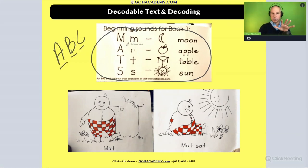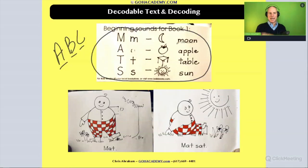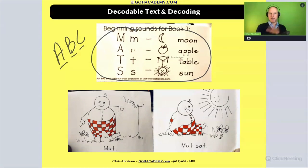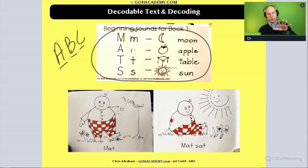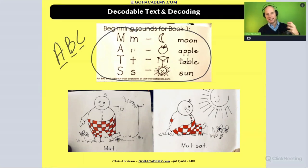So here we have that basic phonics with the alphabetical principle — we're matching up letters with their predictable sounds, like the sound for moon, the sound for apple, the sound for table, the sound for sun. We're using that alphabetical principle review to help with the decoding of the most basic words.